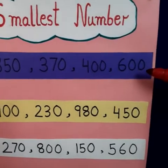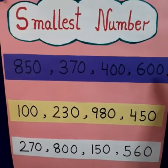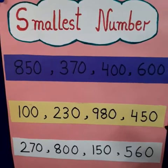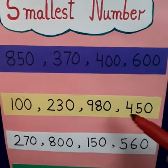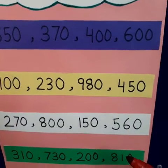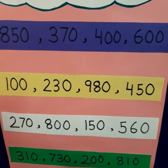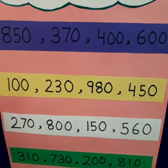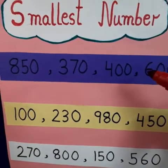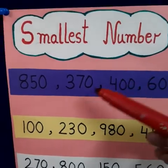We have four rows of numbers. In each row, there are one, two, three and four numbers. The second row also has four numbers, third row four numbers, and in the fourth row also we have four numbers written. Today's activity is to find out the smallest number in each set.